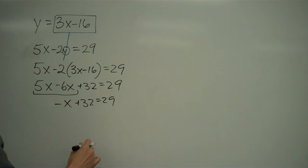Subtract 32 from both sides and I get negative x equals negative 3, which tells me that x must equal 3. I'm not all the way done yet - I need to find both x and y.